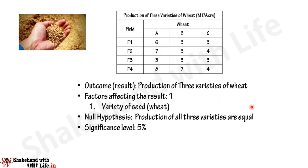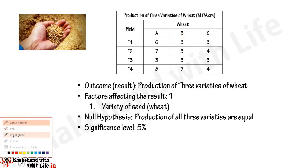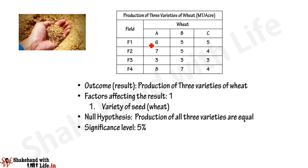We take the same example: the production of three varieties of wheat in metric ton per acre. We have three samples A, B, and C. For variety A, production from four different fields is 6, 7, 3, and 8 metric ton. For variety B, it is 5, 5, 3, and 7 metric ton. For variety C, it is 5, 4, 3, and 4 metric ton.